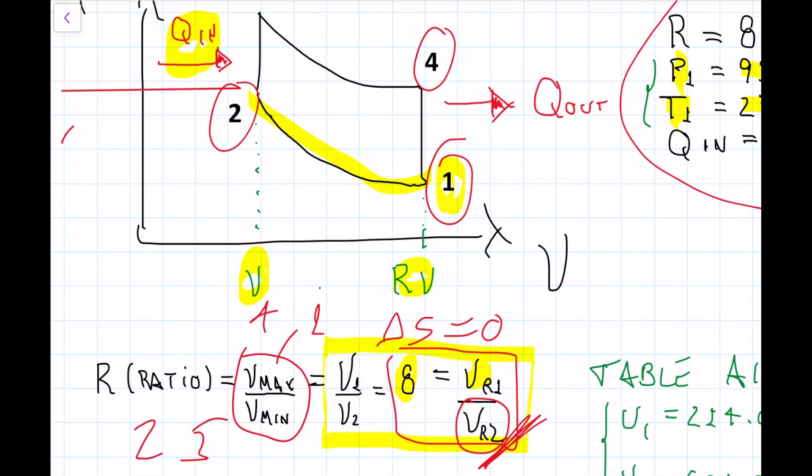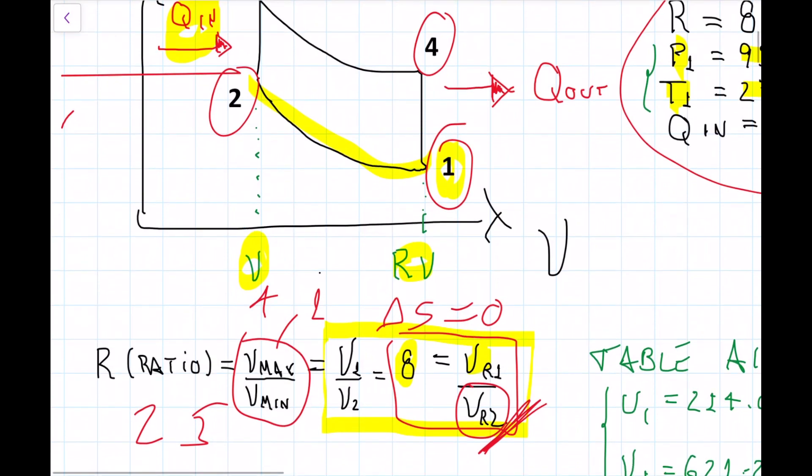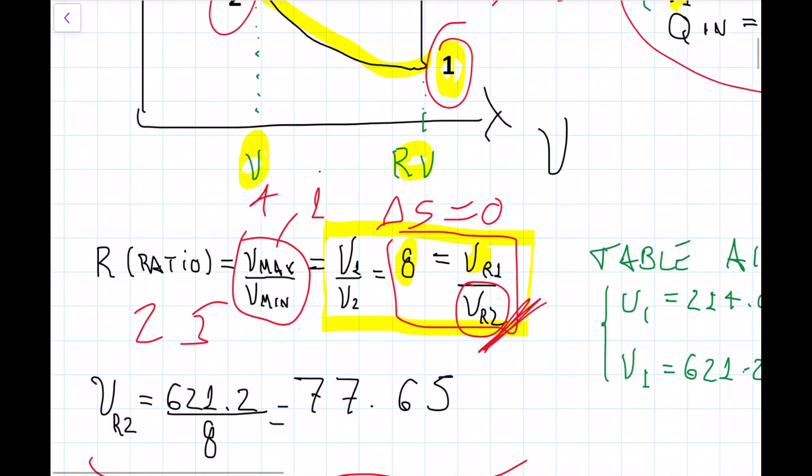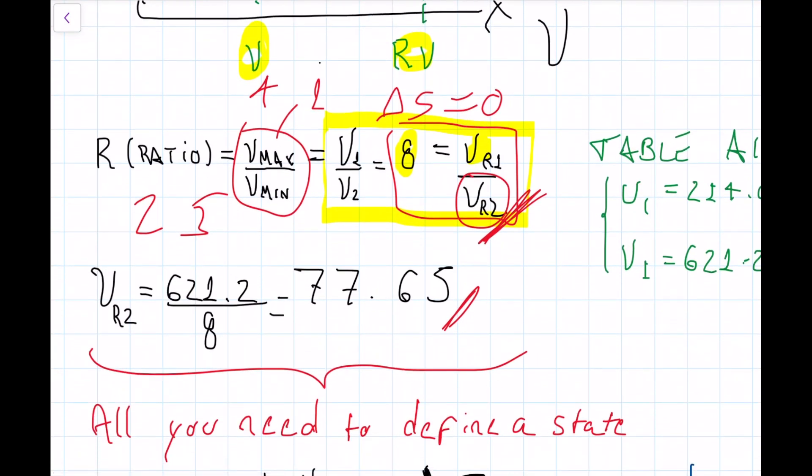If I have my VR2, I define the whole state, right? Because that's the beauty of using these kinds of values. Because I don't need now to find two things to define a state. Because since everything is dependent on temperature, and by everything I mean entropy, internal energy, relative specific volume, relative pressure, entropy. So because all those things are dependent on temperature, as long as I find one of them, I can find all the others. So that's what I'm going to do. I'm going to do a relationship between my VR1 and V8, and I'm going to find that my VR2 is 77.65. And once I have that, I define my second state, and I can go ahead. That's all I need to define my state.